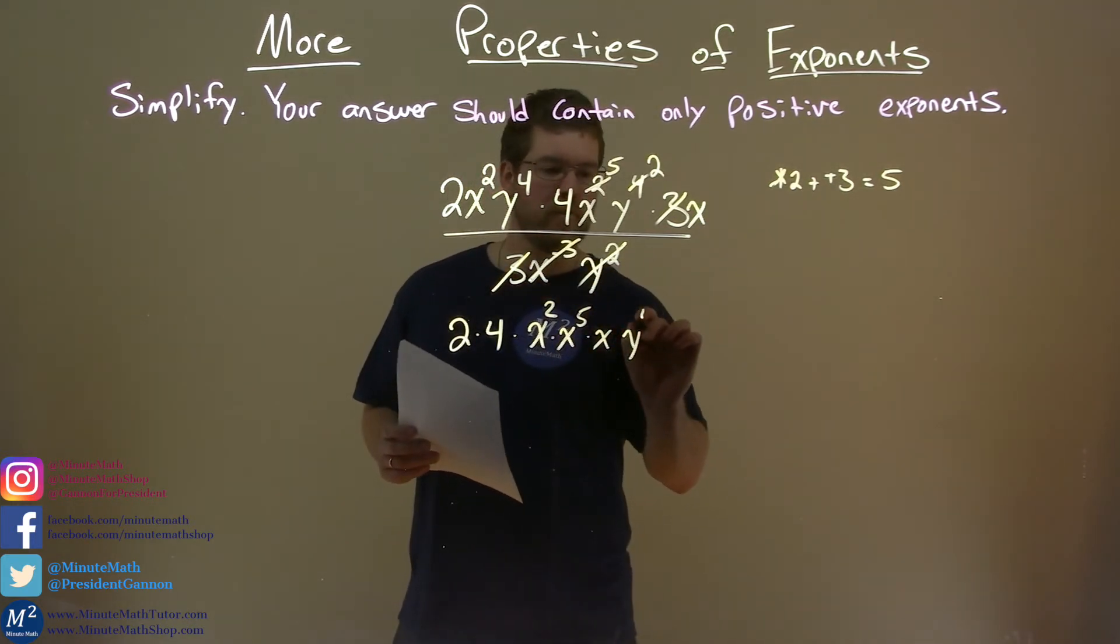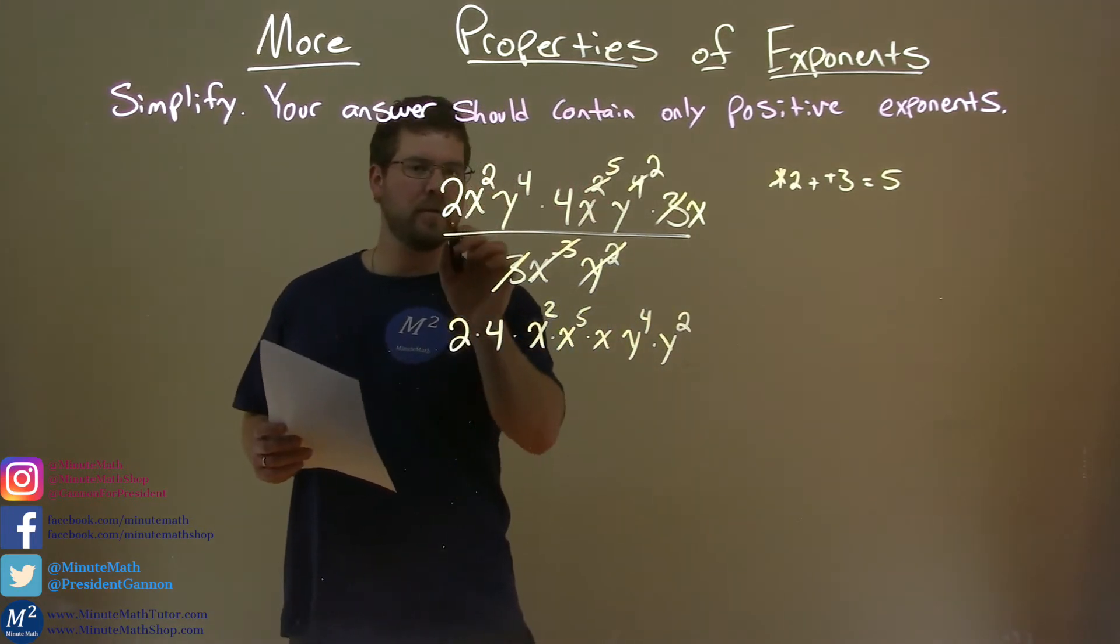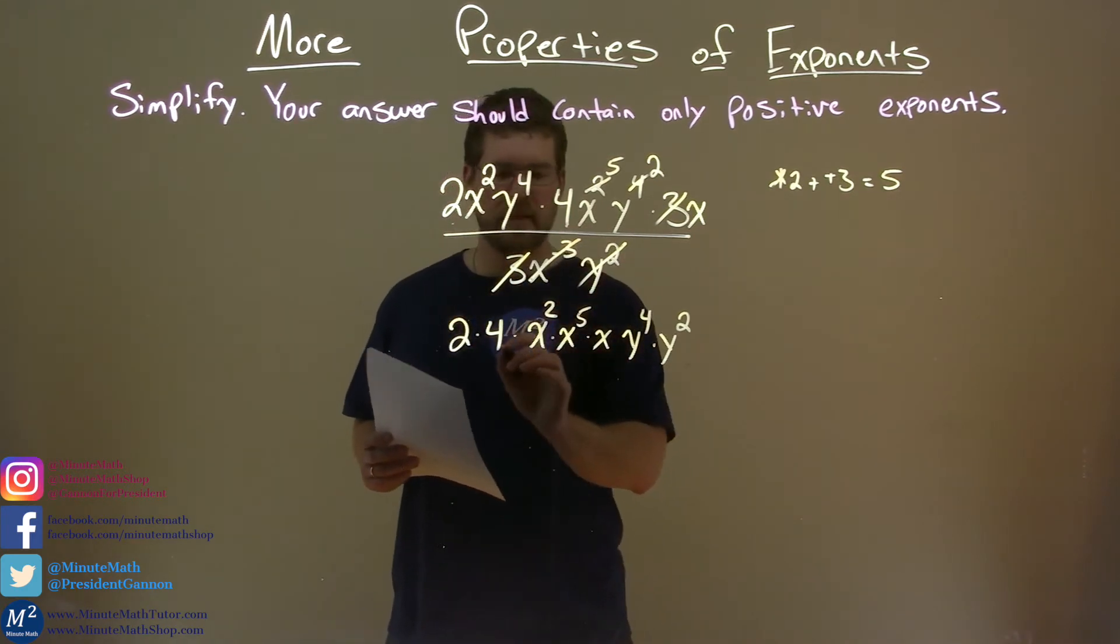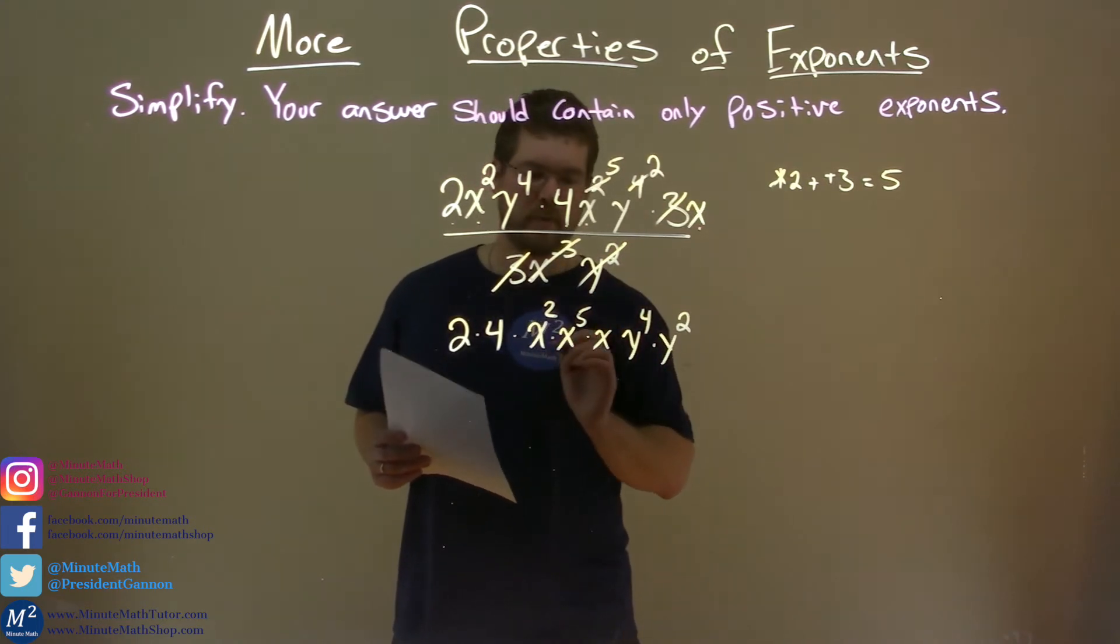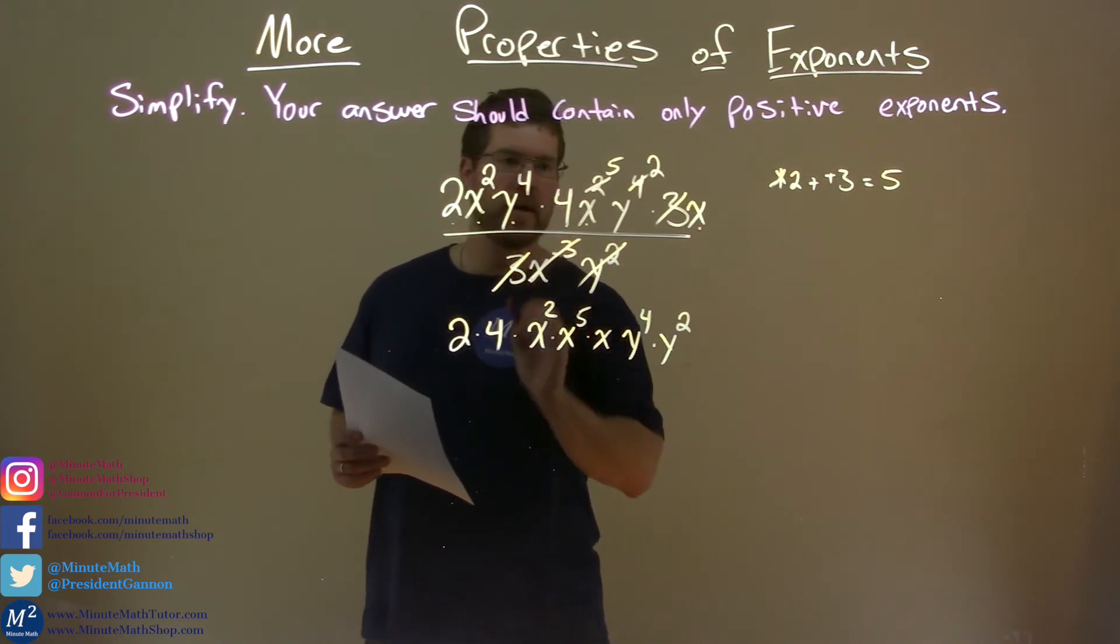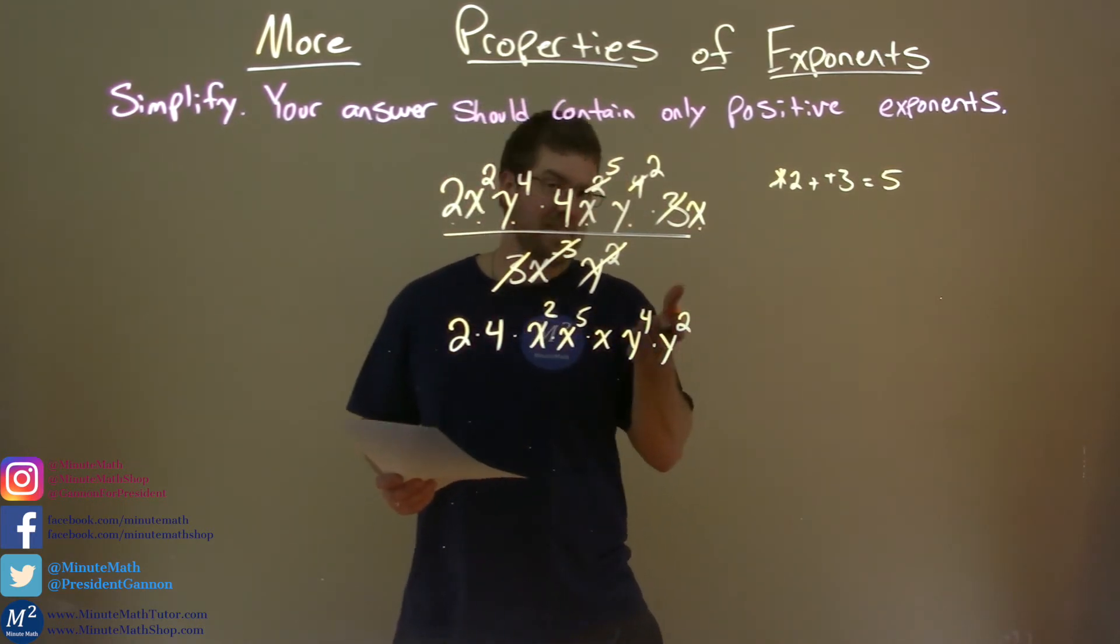Then we have y to the fourth power here. Let's bring the other y, which is now y squared. Let's make sure we got it all: 2 here, got the 4, got this x squared right here and this x to the fifth power as well and that x right there. We have y to the fourth power here and this y squared there. So now we've brought everything down on one clean line.